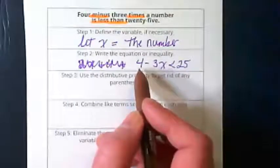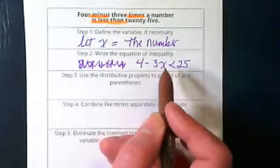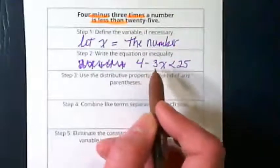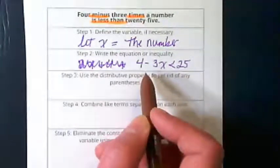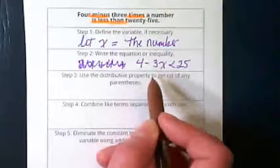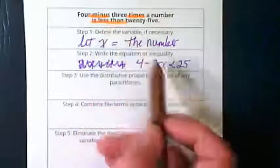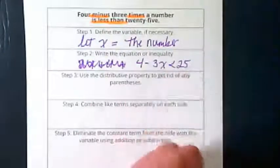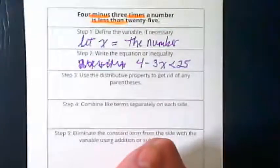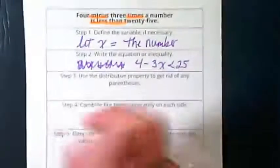Now, this isn't saying 4 less than 3 times the number. It's saying 4 minus 3 times the number, so we get to start with the 4 this time. 4 minus 3 times the number is less than 25. Let's give you a few minutes to see if you can come up with a solution following the steps, and then we will come back together again.